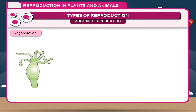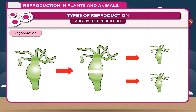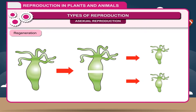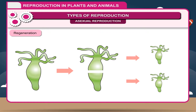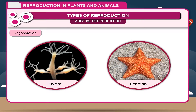Regeneration. The ability of a living organism to regrow or repair a portion of its body that has been injured or lost is called regeneration. The term normally means the regrowth of missing or damaged body parts in higher organisms, but whole body regeneration also occurs in hydra, starfish and many plants. Healing of cut parts of our body is an example of regeneration.